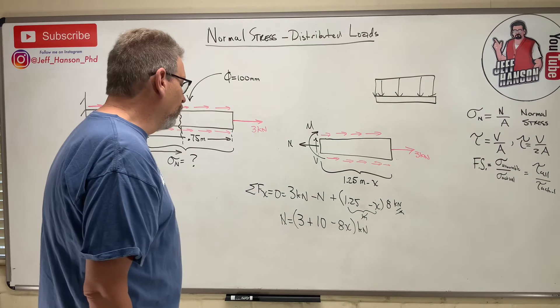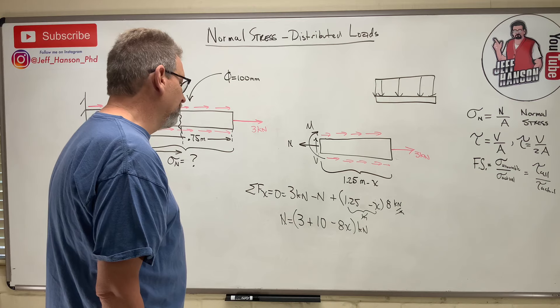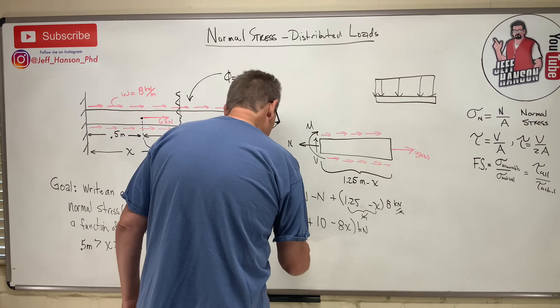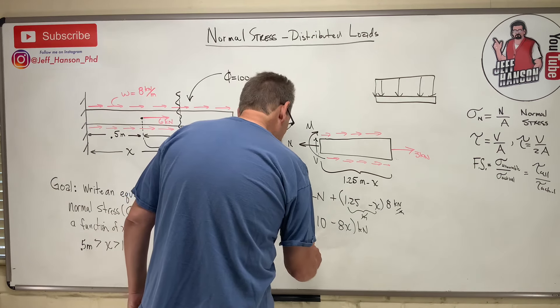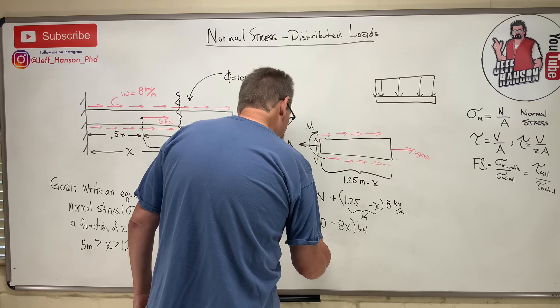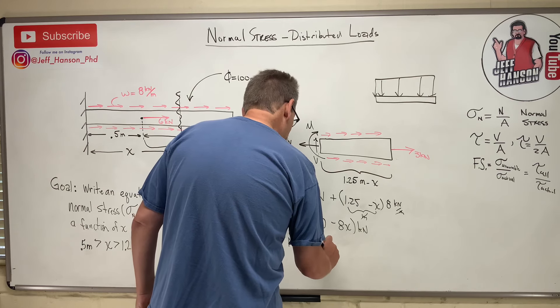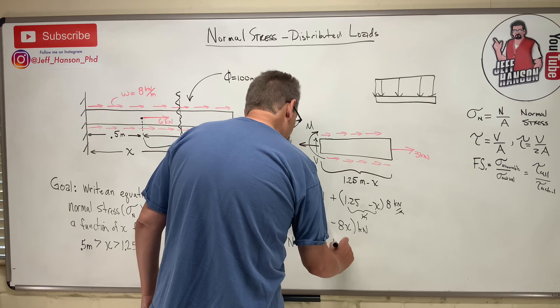And so, let's see. 3 plus 10 is 13. n is equal to 13 minus 8x kilonewtons. Cool? So far, so good.